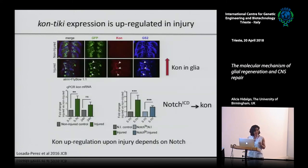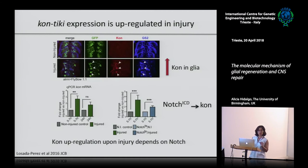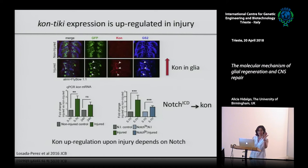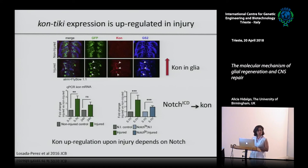Then we asked: what about Contiki? Is it doing anything here? Upon injury, Contiki levels go up specifically in the neuropil glia - Contiki is responding to injury. Contiki levels first go up and then start going down, which you would expect from a homeostatic response. And this increase in Contiki levels depends on Notch - Notch is regulating this response.